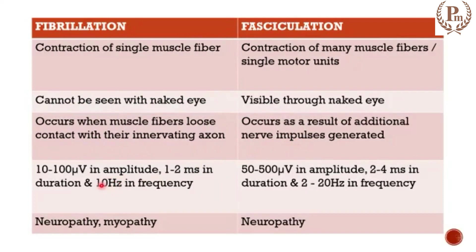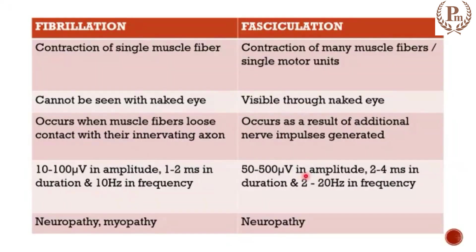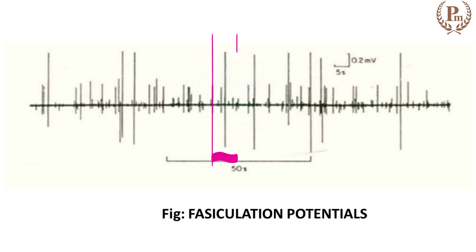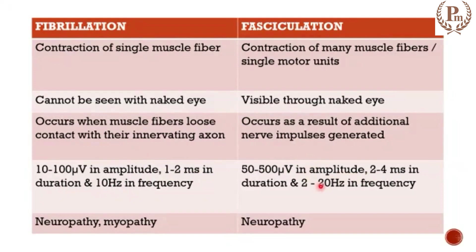In terms of EMG, fibrillation is 10 to 100 microvolts in amplitude and 1 to 2 milliseconds in duration, with a frequency of 10 hertz. For fasciculation, the amplitude is 50 to 500 millivolts, as many muscle fibers are involved, and the duration is 2 to 4 milliseconds.